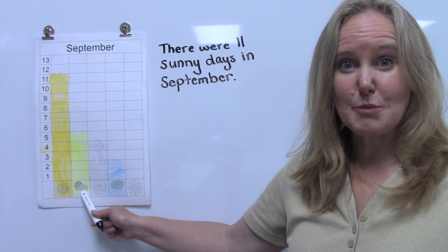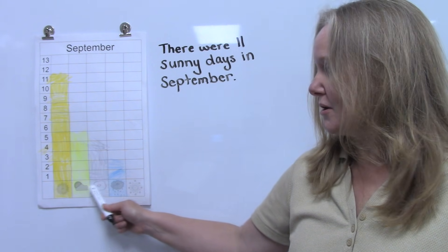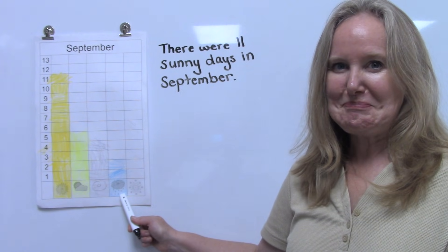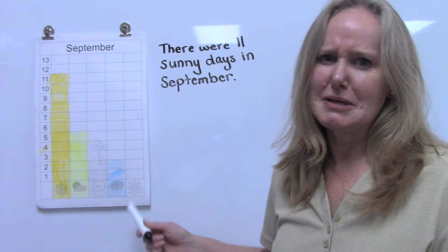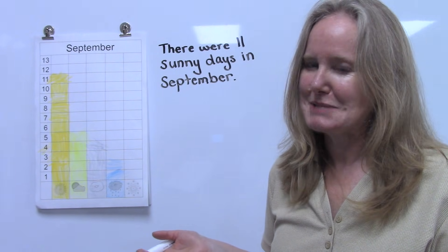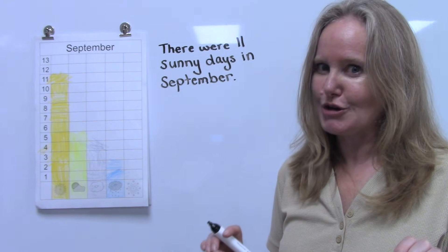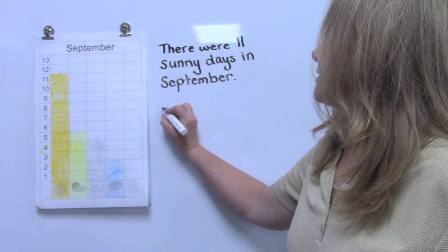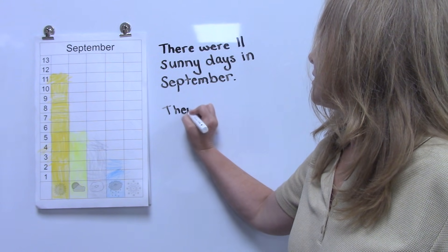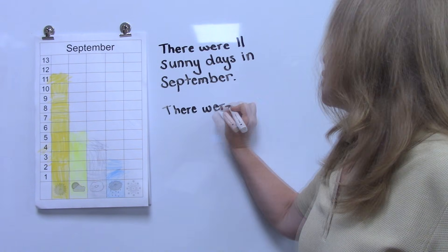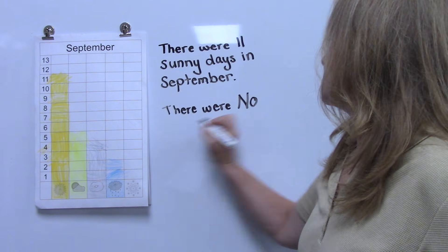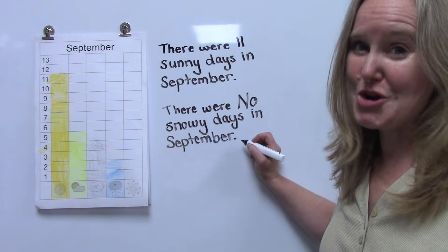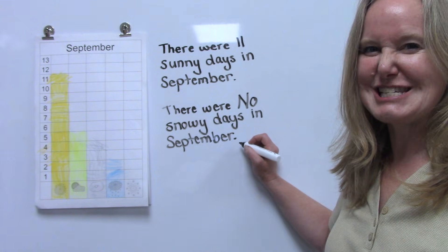I want you to think about another fact or observation you could write about from this graph — is it about how many partially cloudy days there were, or cloudy, or rainy? I'm going to write about snowy, because there were no snowy days in September. That would be very strange weather for September!